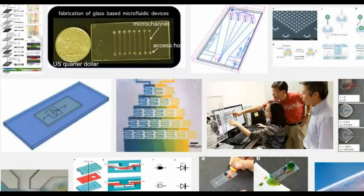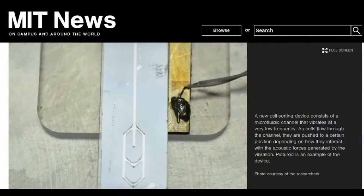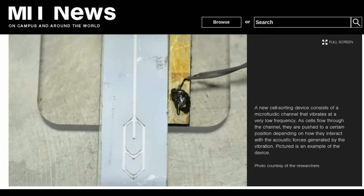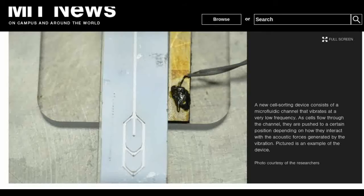A team of MIT researchers has now developed a new way to sort cells, based on their acoustic properties. That's how they are affected by sound waves.